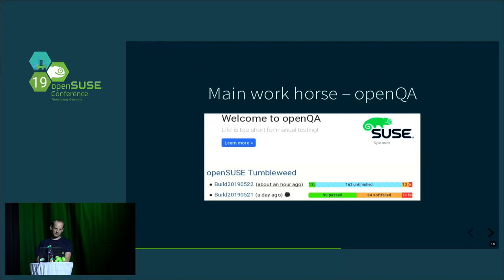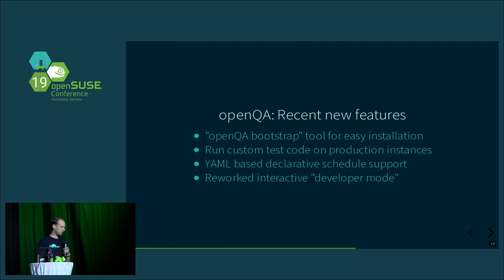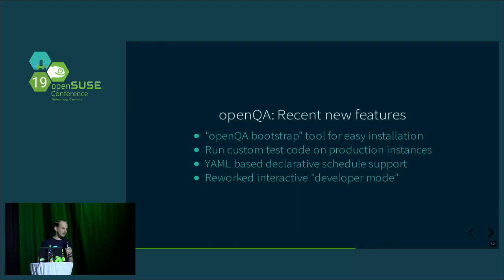If you're interested, I'd be happy to give an introduction to openQA. Even if you know it, there are recent new features. There is an openQA bootstrap tool for easy installation — something like a one-click solution. Also, it's not even necessary to install openQA yourself to try it: you can run custom test code on production instances. Because tests rely on virtual or physical machines, your experimental tests don't need to be accepted into the main branch first — you can have your own git repository and try out or add tests on a production instance.